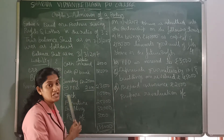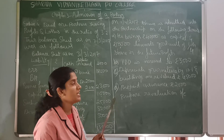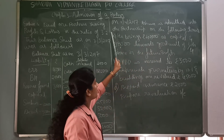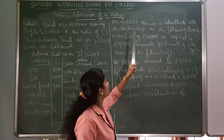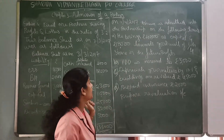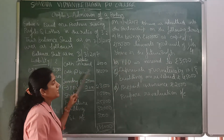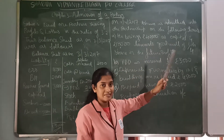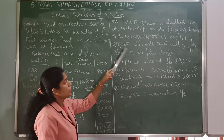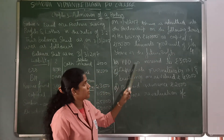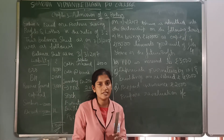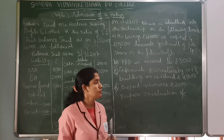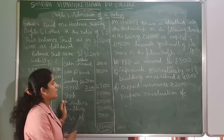Along with the balance sheet, certain adjustments are also given. On 1-4-2017, Ashwin is admitted into the partnership on the following terms. Sachin and David were running the business, and now Ashwin is admitted. He brings Rs. 40,000 as capital and Rs. 18,000 towards goodwill for one-fourth share of future profits. This goodwill is related to the partners' capital account and will not be taken to the revaluation account while preparing it.